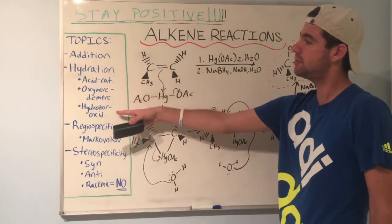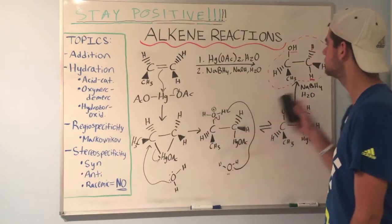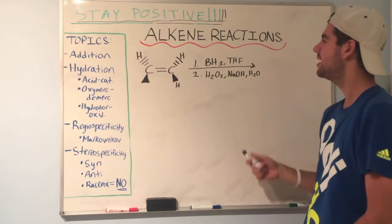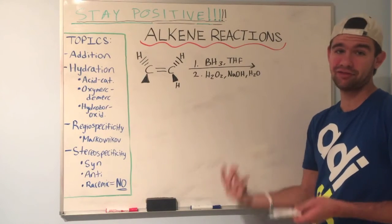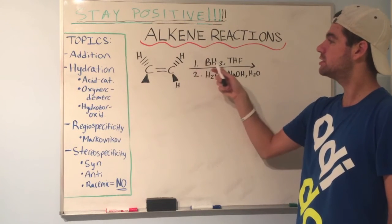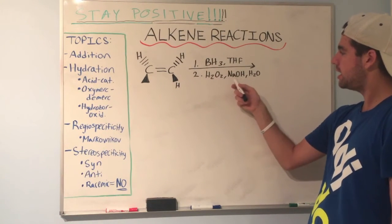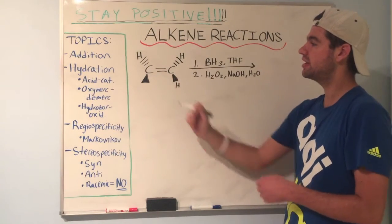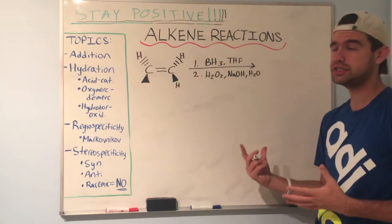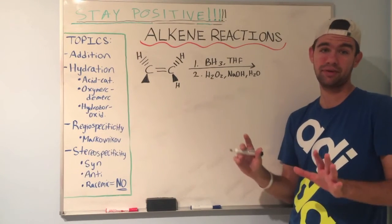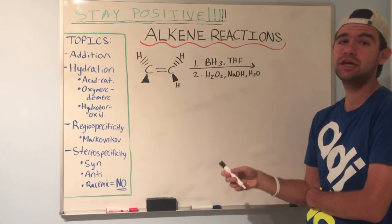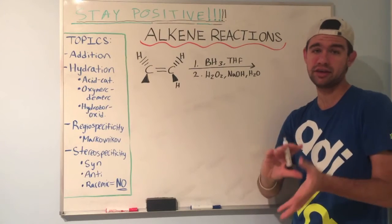Finally, let's talk about the third type of hydration: hydroboration-oxidation. This is the basic setup — again a confusing set of reagents you have to memorize for test day, but it's two steps just like oxymercuration-demercuration. First: BH3 and THF. Second: H2O2, NaOH, and H2O. Here we have an alkene where one carbon is more substituted than the other because of its methyl group. You don't really have to know the mechanisms for these unless your teacher says otherwise — most OCHEM courses just require knowing which reagents give which products.